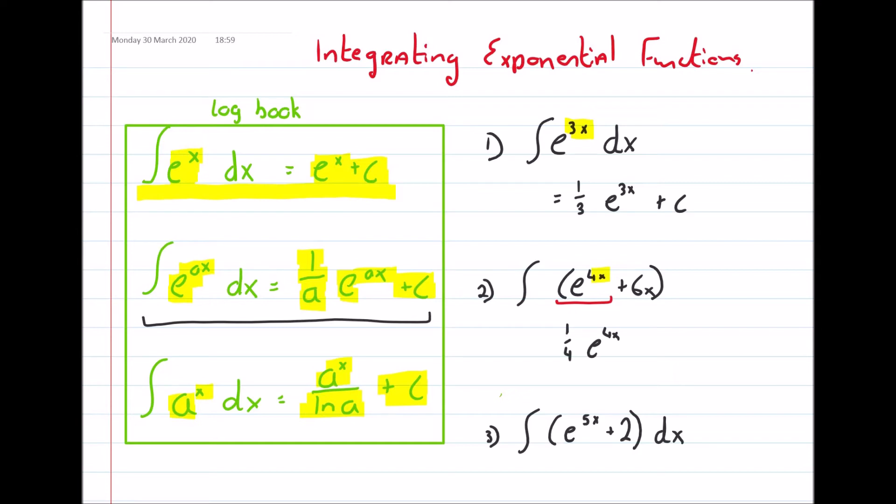And then, we'll integrate the 6x. So the 6x integrated will become plus 6x, and increase the power by 1. So that was an invisible 1, that's a 2. And then divide everything by what the new power is.